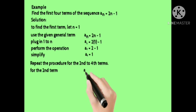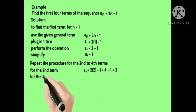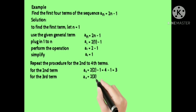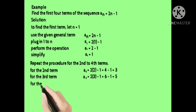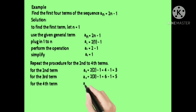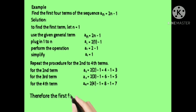For the next terms, repeat the procedure. For the second term, plug in 2: a sub 2 is equal to 2 times 2 minus 1, which equals 4 minus 1, equals 3. For the third term, plug in 3: a sub 3 is equal to 2 times 3 minus 1, equals 6 minus 1, equals 5. Lastly, a sub 4 is equal to 2 times 4 minus 1, equals 8 minus 1, equals 7.